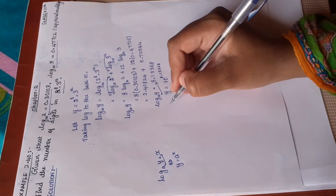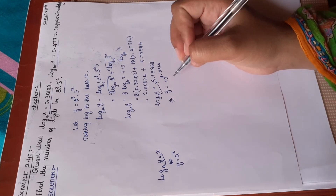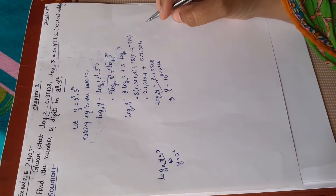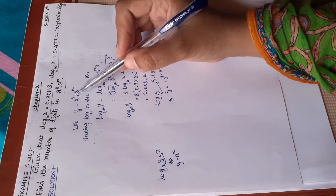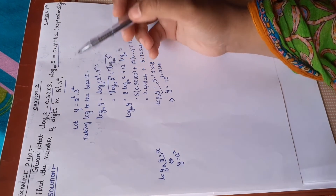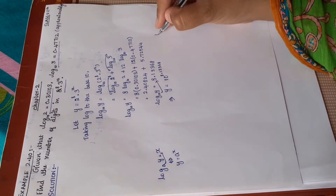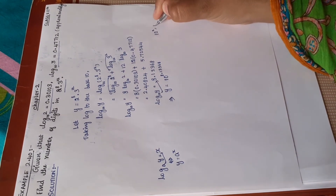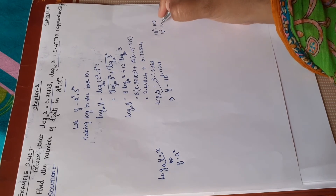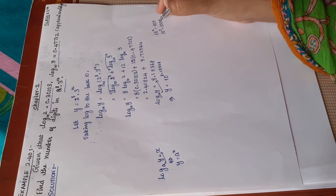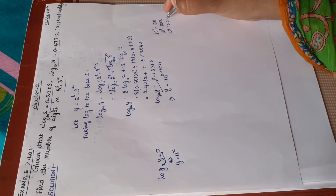So y, which is 2 power 8 into 3 power 12, equals 10 to the power 8.13368. To find the number of digits: we know 10 squared is 100 (3 digits), 10 cubed is 1000 (4 digits), and 10 power 4 is 10,000 (5 digits). So for 10 to any power n, we get n+1 digits in the result.